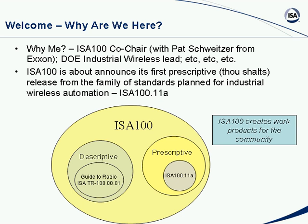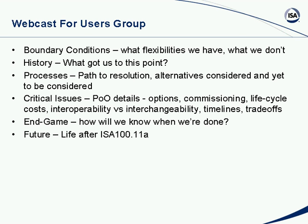The first prescriptive document will be ISA 100.11a, which will describe a real standard as it comes out. What we're going to talk about today is the principles of operation, a document that will outline the standard — the standard will be derived from those principles of operation. This webcast was requested by the user's group so they can gain information about how the principles of operation might be used to derive a standard. We're going to start talking about boundary conditions, what flexibilities we have and don't have, a bit about history, what processes we use, what alternatives are considered and yet to be considered.